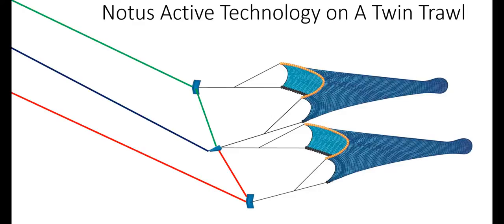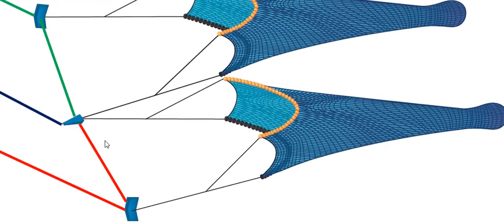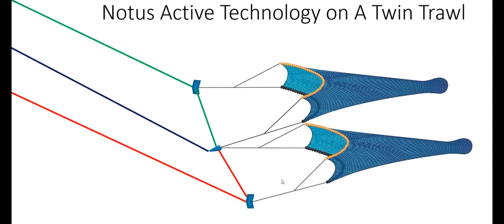As well, NOTUS has the ability to give the spread on each net. Here we have the spread on the starboard net and the spread on the port net. And if this were a triple trawl, we'd have three spreads.